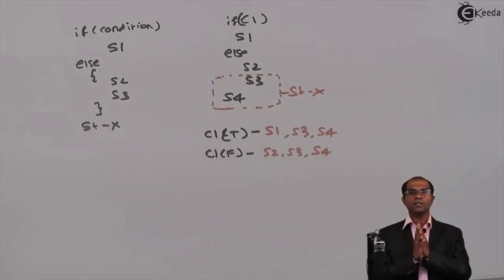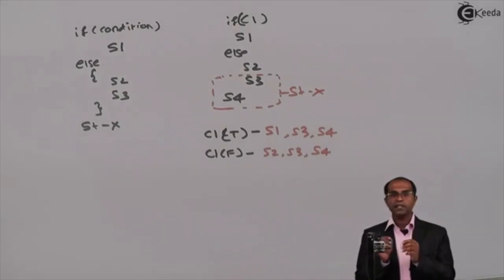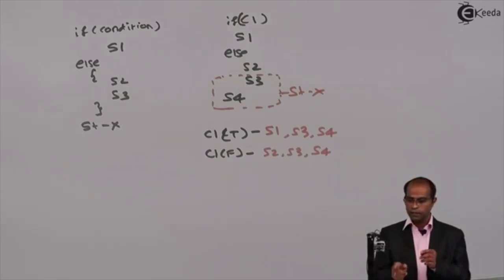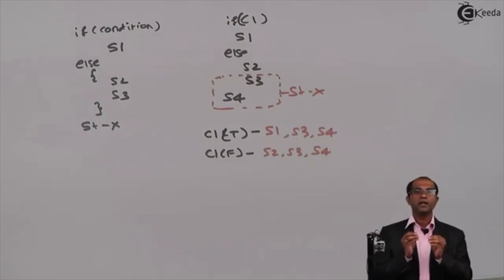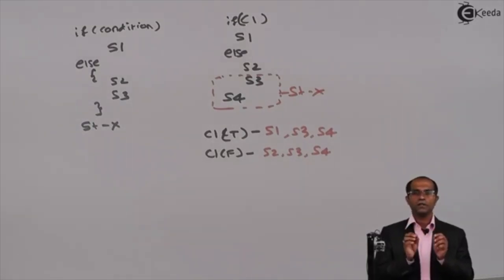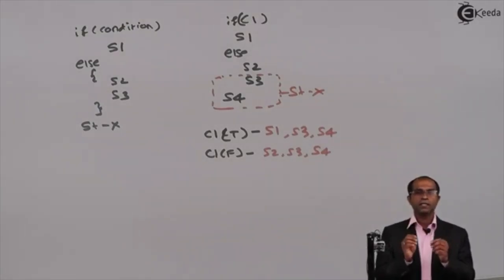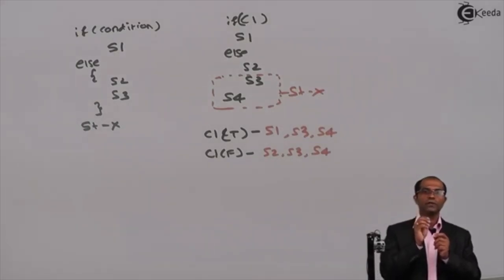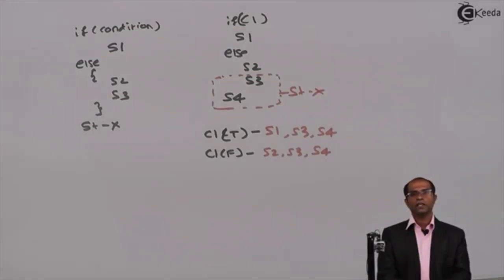Don't go by the alignment of instructions — alignment will never make an instruction part of a block. Only instructions enclosed in a pair of curly brackets are identified as a block. So s3 and s4, even though aligned with s2, are part of statement x, not the else block. To summarize: curly brackets are compulsory for multiple instructions, and optional for a single instruction. Also, the condition must always be associated with 'if', not with 'else'. These are the key precautions to keep in mind when using if and if-else. Thank you.